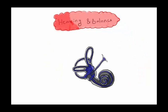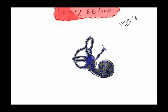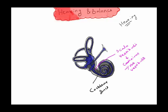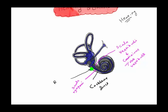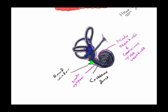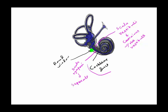The process of hearing occurs inside the cochlea. The cochlear duct from the membranous part divides the cochlear cavity into three parts: the scala vestibuli, which is continuous with the vestibule and contains perilymph, and the scala tympani, which is separated from the tympanic cavity by the round window.